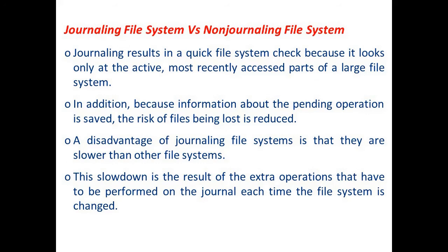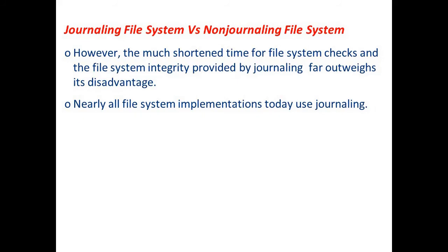Journaling results in a quick file system check because it looks only at the active, most recently accessed parts of the file system. Because information about pending operations is saved, the risk of files being lost is reduced — a major advantage over non-journaling file systems. A disadvantage is that journaling file systems are slower due to extra operations on the journal each time the file system changes. However, the shortened file system check time and integrity benefits far outweigh this disadvantage, which is why nearly all file system implementations today use journaling.